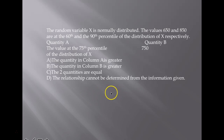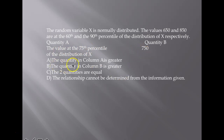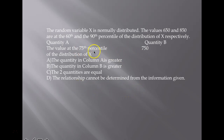Coming to GRE quantitative section problems. The first problem: the random variable x is normally distributed. The values 650 and 850 are at the 60th and 90th percentile of the distribution of x respectively. Quantity A is the value at the 75th percentile and Quantity B is 750. We need to decide whether Quantity A is greater, Quantity B is greater, the two quantities are equal, or the relationship cannot be determined.